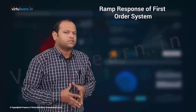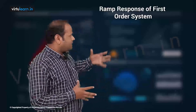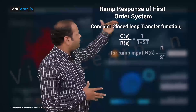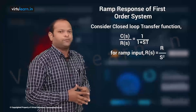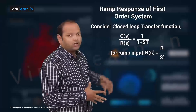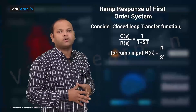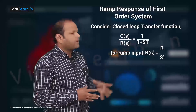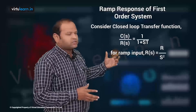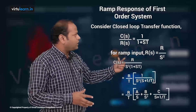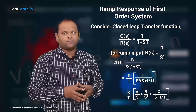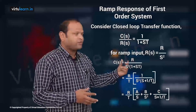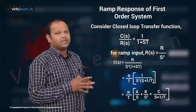The ramp response of first order system - the analysis is similar. We take the transfer function C(s)/R(s) = 1/(1 + sT). In this case R(s) is 1/s² for unit ramp. So C(s) = 1/(s²(1 + sT)), and we can write this C(s) as A/s + B/s² + C/(1 + sT).